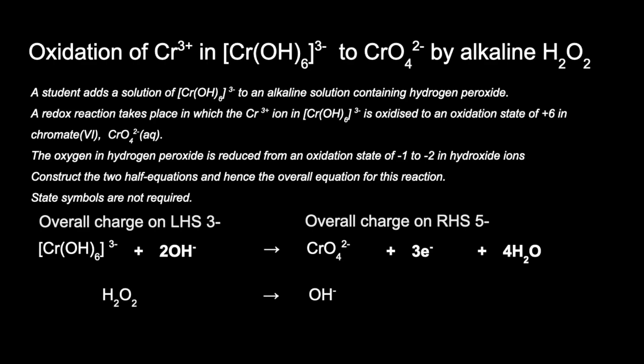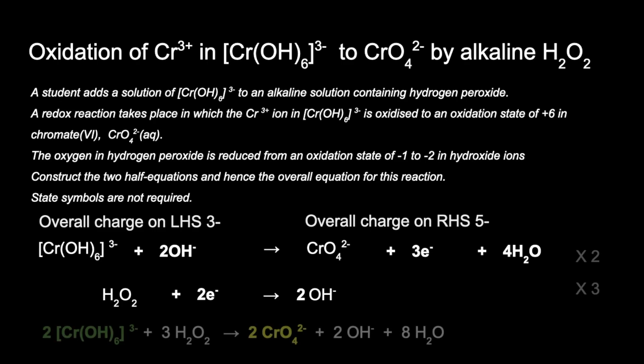For the hydrogen peroxide half equation, putting a 2 in front of the OH⁻ ions balances all atoms straight away. The overall charge on the left is zero but 2− on the right, so we add 2 electrons to the left. Now combining the half equations: multiply the chromium half equation by 2 to give 6 electrons, and treble the hydrogen peroxide equation to also give 6 electrons. Adding them together gives the overall equation.